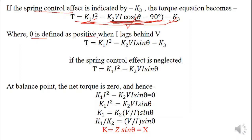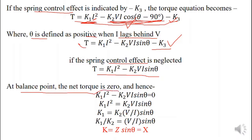Theta is defined as positive when I lags behind V. The torque equation is therefore modified to K1I² − K2VI sin θ − K3. Neglecting the spring control effect, the equation reduces to K1I² − K2VI sin θ. During the normal operating condition at the balance point, the two torques — operating and restraining — are equal. Modifying this equation, we get a constant K equal to Z sin θ, and since Z sin θ equals X, the reactance is equal to a constant during normal operating condition — essentially the preset value measured by the relay.